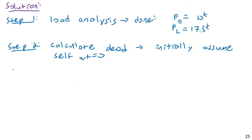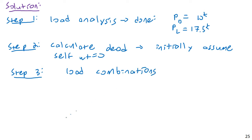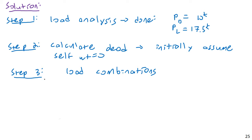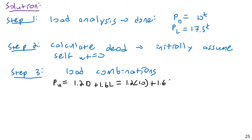Step three: load combinations. We'll get our P_ultimate. While we only have dead and live — obviously a more complicated real-world structure would require environmental loadings — our ultimate loading is simply 1.2 dead plus 1.6 live. That's 1.2 times 10 plus 1.6 times 17.5, which comes to an overall factored point load of 40 kips.